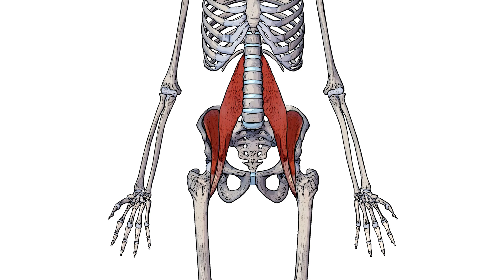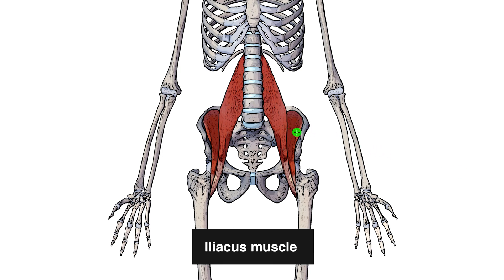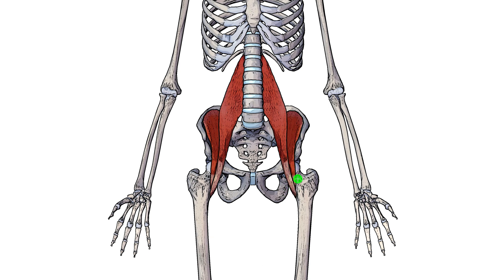The iliacus muscle, which you can see I've brought in here, is filling the superior two-thirds of the iliac fossa and coming down and sharing an insertion point with the psoas major muscle on the lesser trochanter of the femur.